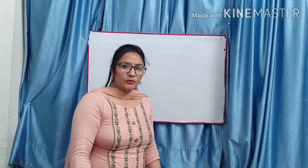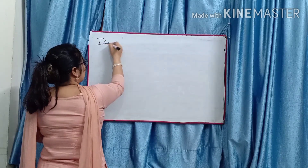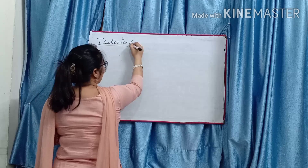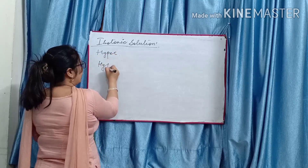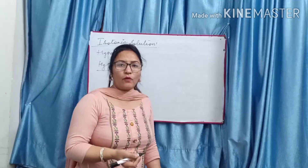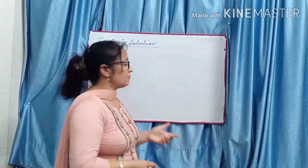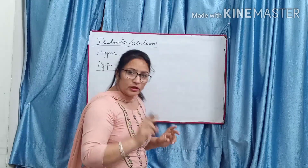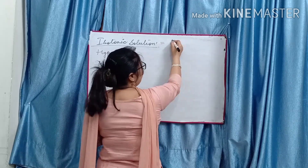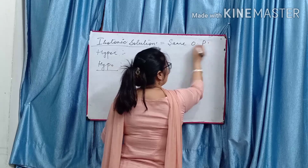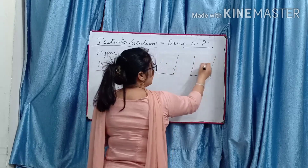In this video we will do some questions and topics related to osmotic pressure. First, isotonic solutions - isotonic solution kisko bolte hain, hypertonic solution kisko bolte hain, hypo tonic kisko bolte hain. There are three types of solutions: iso, hyper, and hypo. Iso means same - jin do solutions ka osmotic pressure same hoga, unko hum bolenge isotonic solutions.